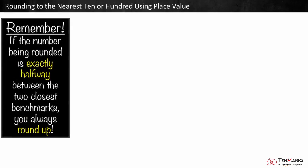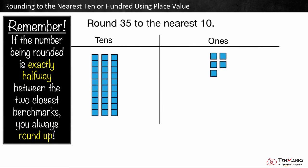Remember, if the number being rounded is exactly halfway between the two closest benchmarks you always round up. For example, round 35 to the nearest ten. We are exactly five ones away from 30 and five ones away from 40.